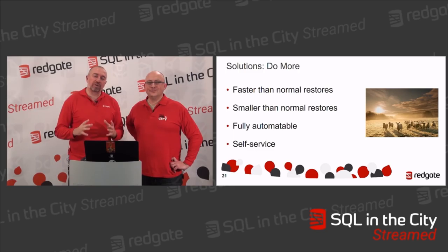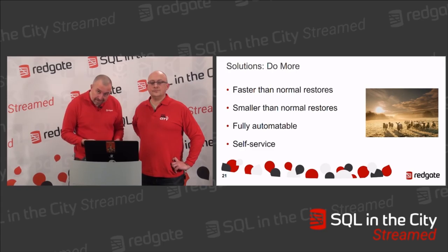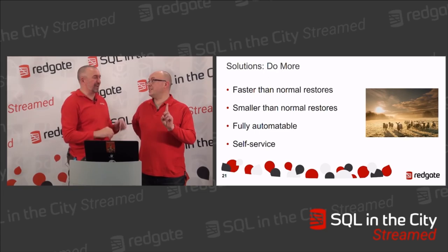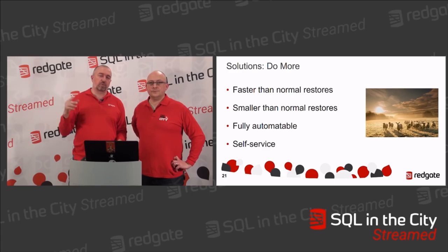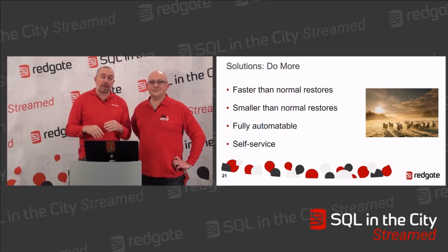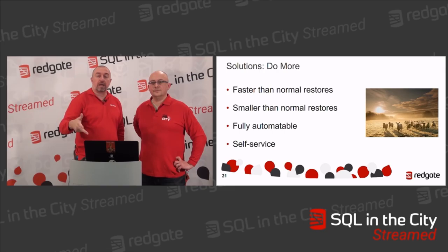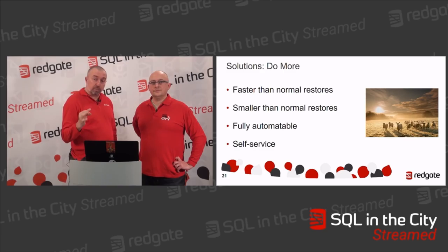The whole idea is to do more: faster but normal restores, smaller but normal restores. It will be fully automatable with PowerShell — not in the current beta, but coming. If you want to try it, it is in beta: go to redgate.com/HOL for the hands-on labs. As a data professional — whether you're a database developer or a DBA — you can do more with less: get more out the door, because it's smaller, faster, automatable, and it can become self-service. You put it all in a shared protected place, you've cleaned it, and you distribute it to the dev teams.